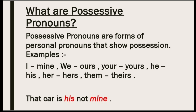Have a look at this example: 'That car is his, not mine.' This sentence is describing the ownership of a car — it is his and it is not mine. There are two possessive pronouns showing ownership of the car in this sentence: 'his' is the first one and 'mine' is the second one. So a possessive pronoun is derived from a personal pronoun and its main task is to show possession, to show ownership.